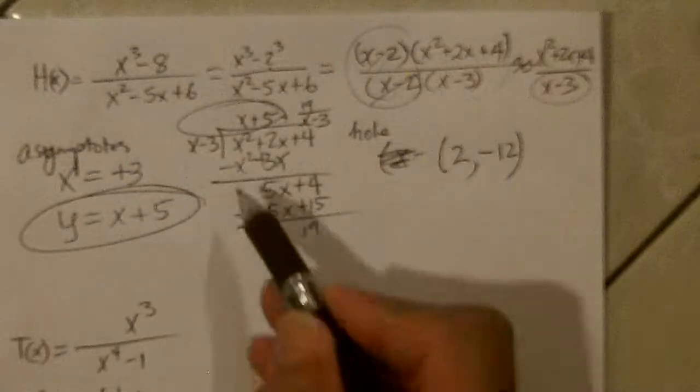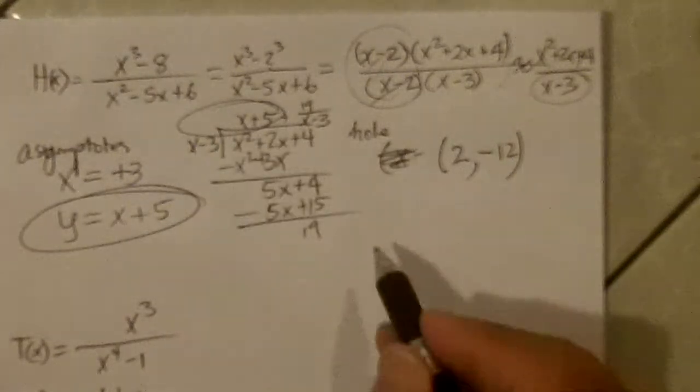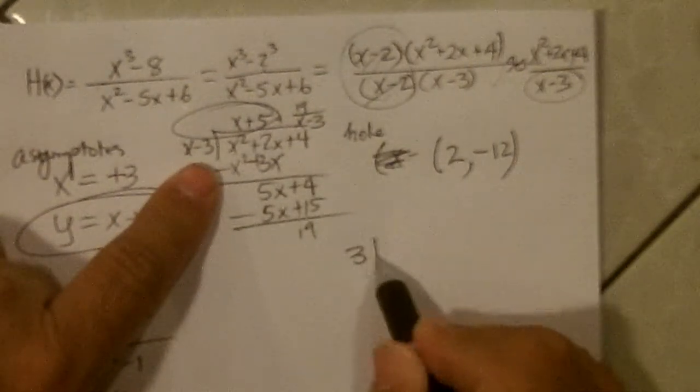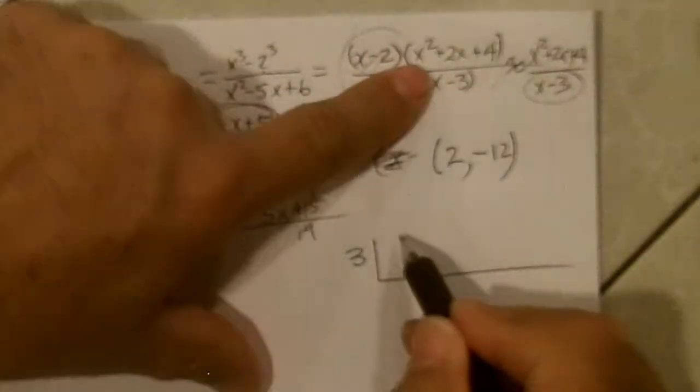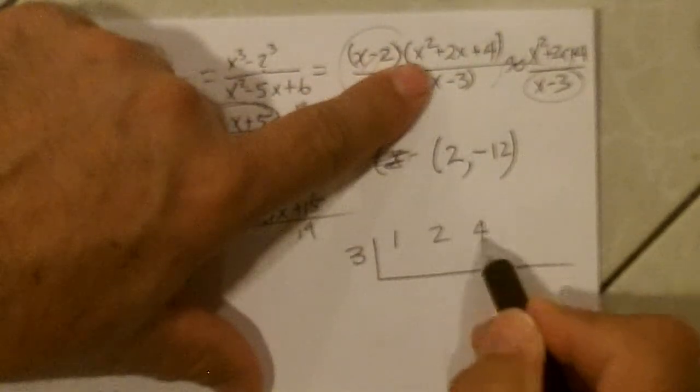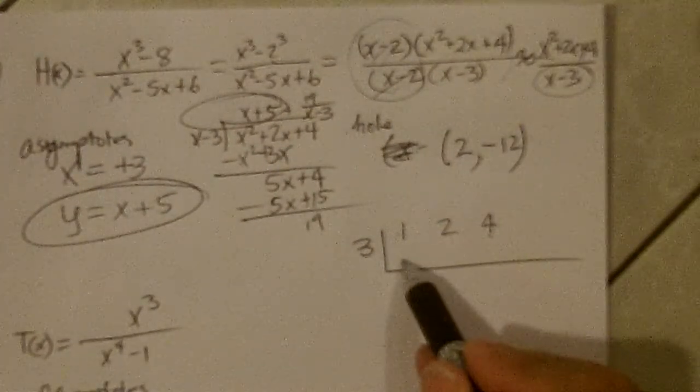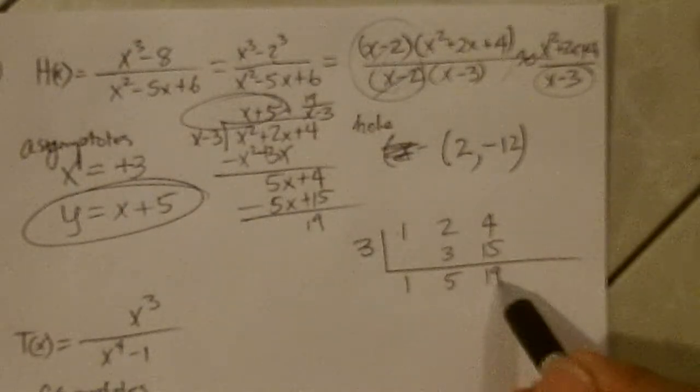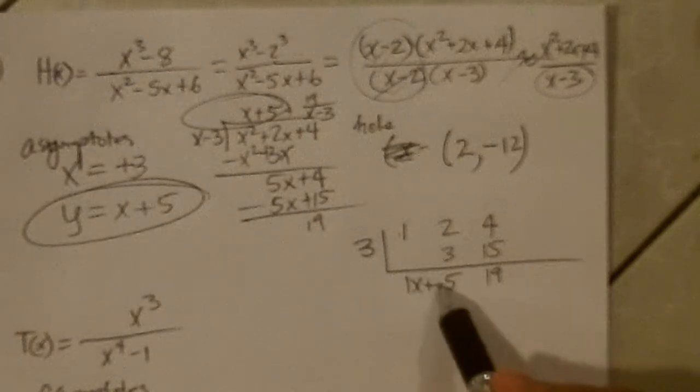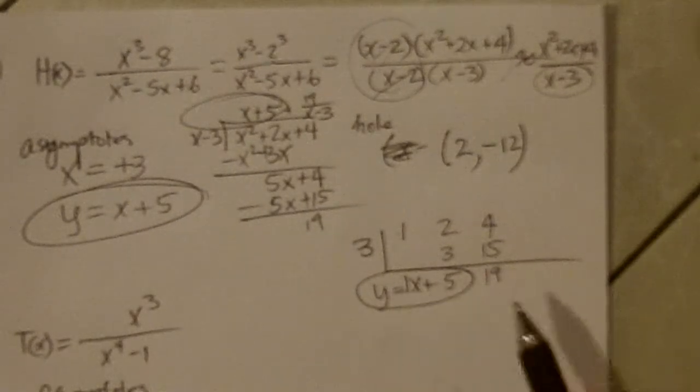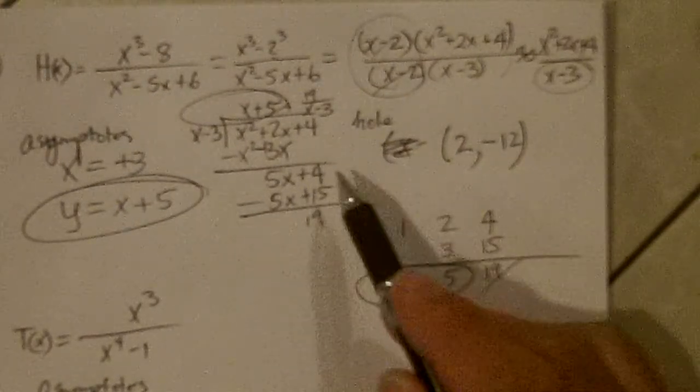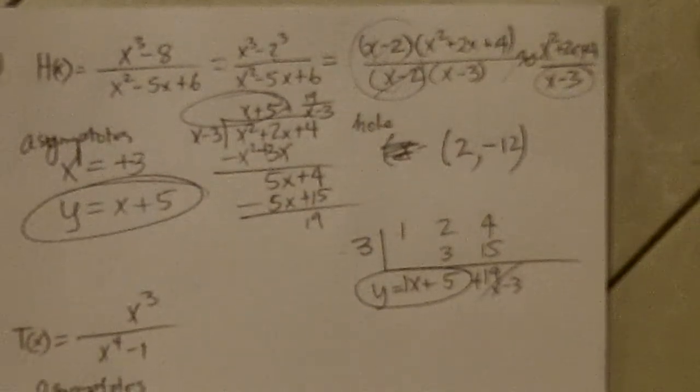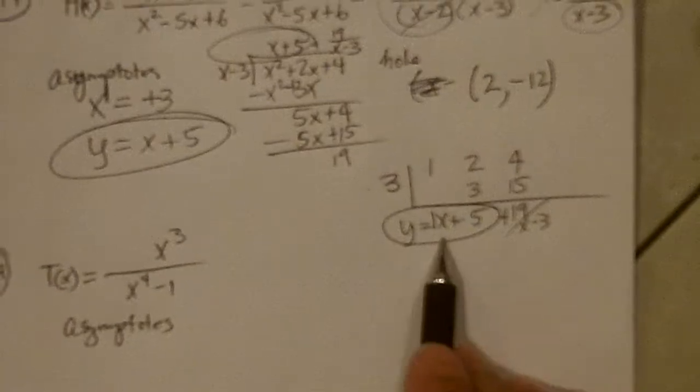Now we could have done this with synthetic, now that you know how to do that. x minus 3, the value is 3, and we want to divide that into 1x squared, 2x plus 4. 1 plus 0 is 1, times 3 is 3, 3 plus 2 is 5, 15, 19. So I got 1x plus 5 is my oblique asymptote. And 19 over what I was dividing by, x minus 3, is my remainder portion, but I don't need that. My oblique asymptote.